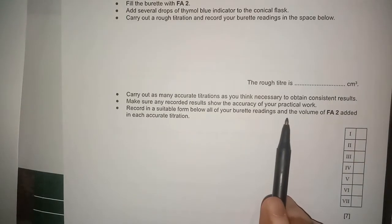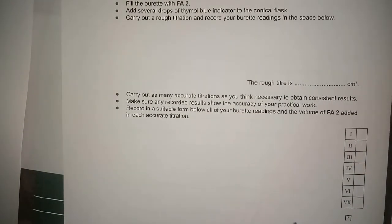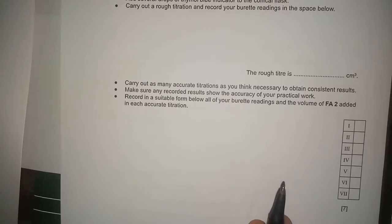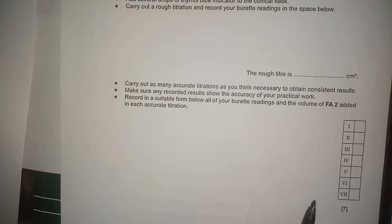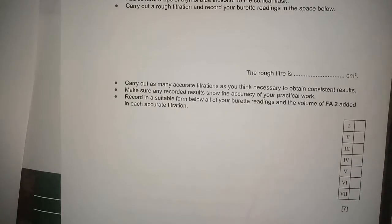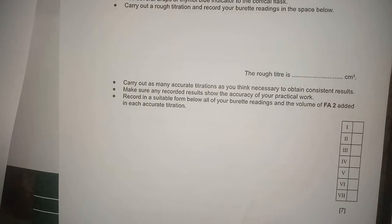Consistent means we have readings with a difference of 0.1. When the difference between two readings is 0.1, we call these two readings consistent readings. Please be careful while performing the experiment, but the format of the table must look like what is shown.